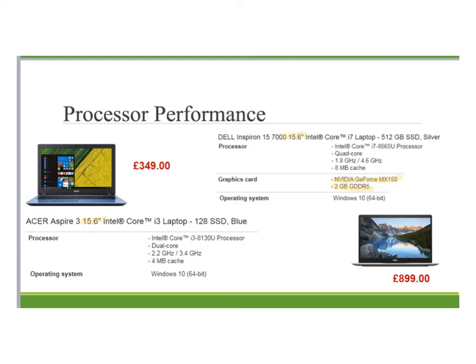We can see that they both have Intel Core i processors. This is an i3 and this is an i7, so you can see the Dell has one of the upgraded chips. Anything with an i is pretty good, but the higher the number the better it is. The Dell also has a 512 gigabyte SSD drive — a solid state disk, which is a fast hard disk — whereas the Acer only has 128 gigabytes of that space.